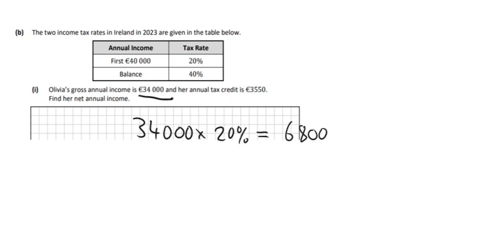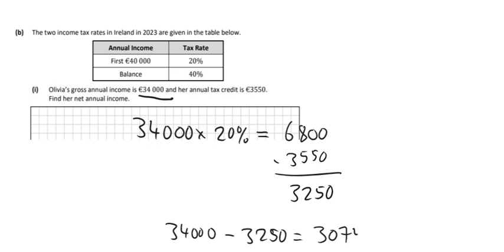Then that's the amount of tax he has to pay. But we have to take away the tax credit from that. That reduces the amount of tax that he has to pay. So tax credit is always a good thing. And we get 3,250. So that's the actual amount he has to pay then when we take the tax credit into account. And then we're just going to take the 34,000 that he earns. Take away 3,250 because that's the actual amount he has to pay for tax. And we get 30,750.